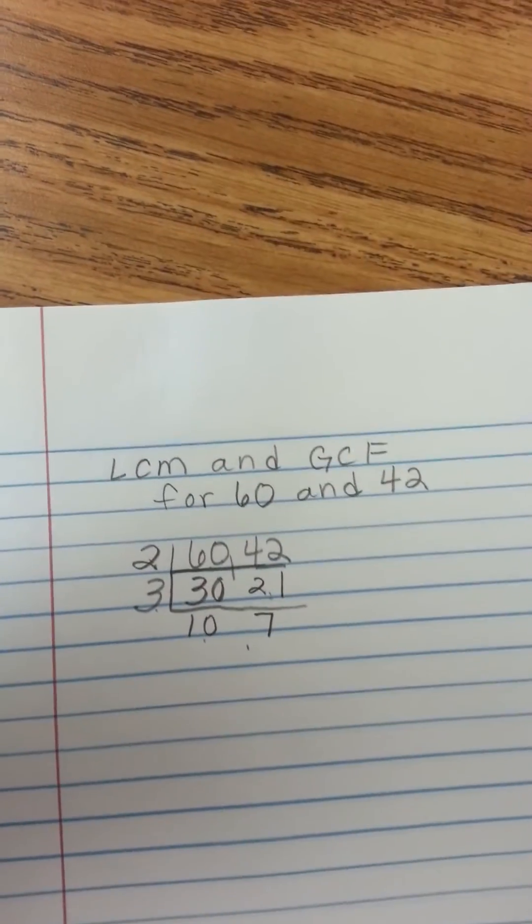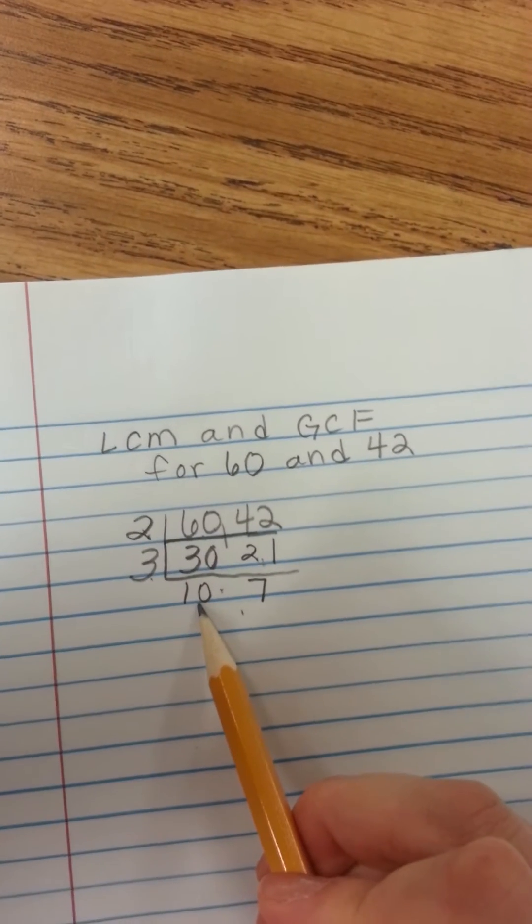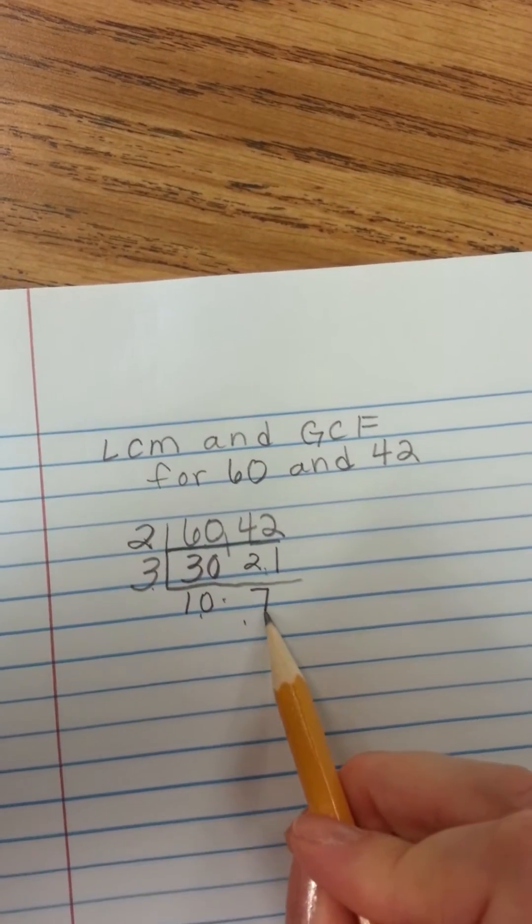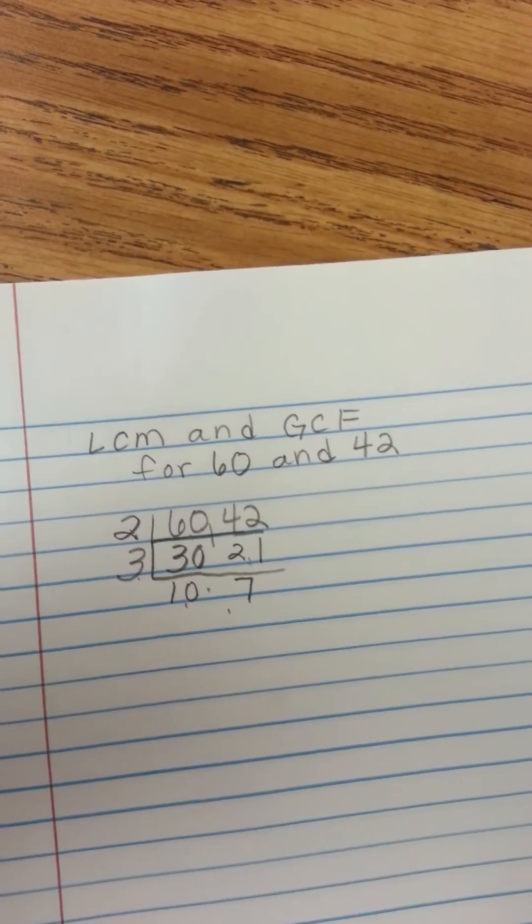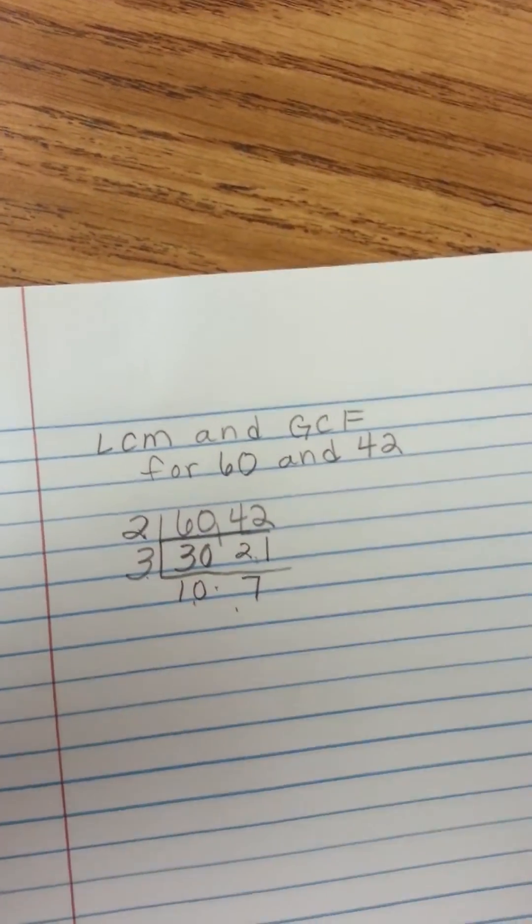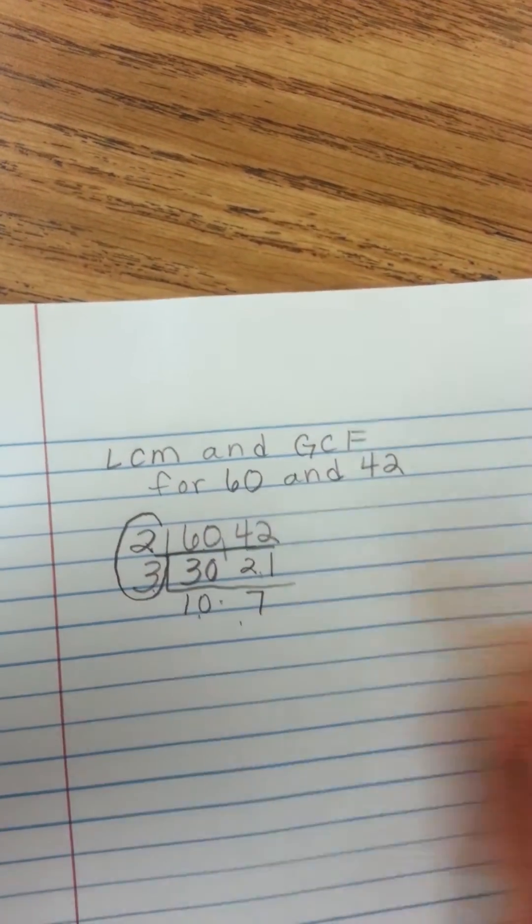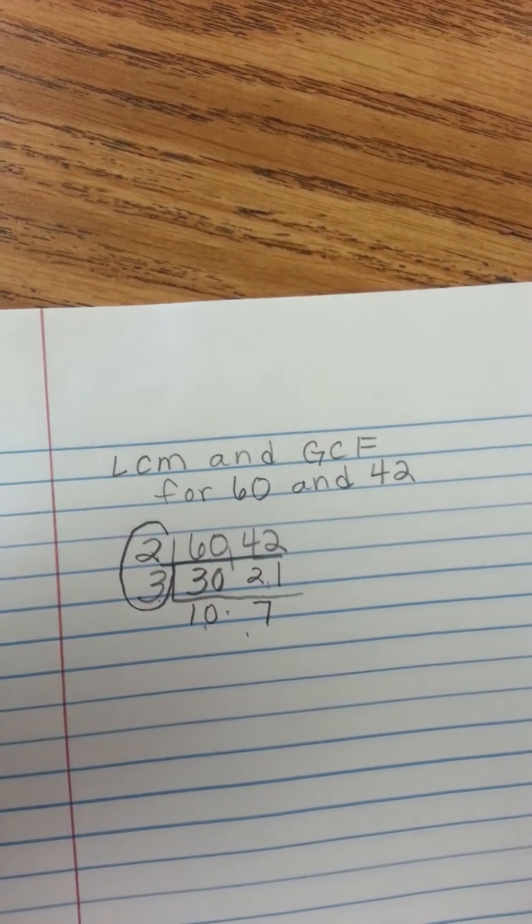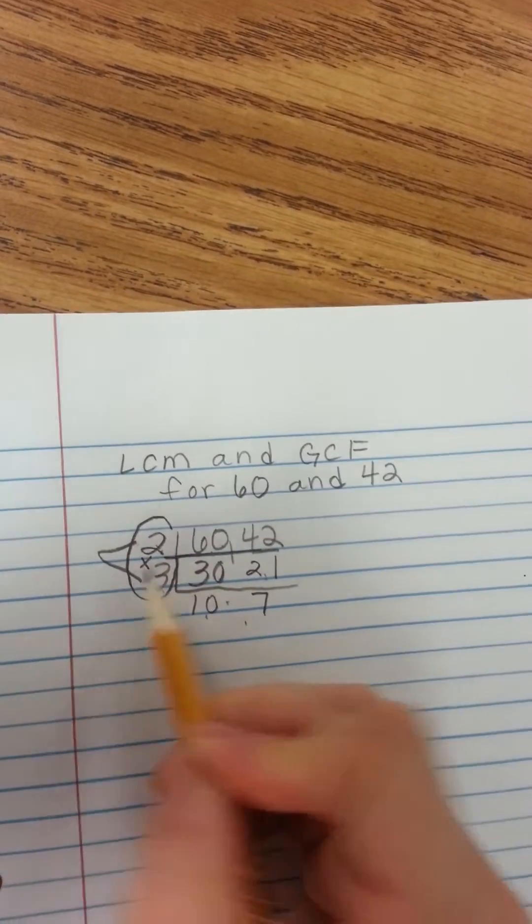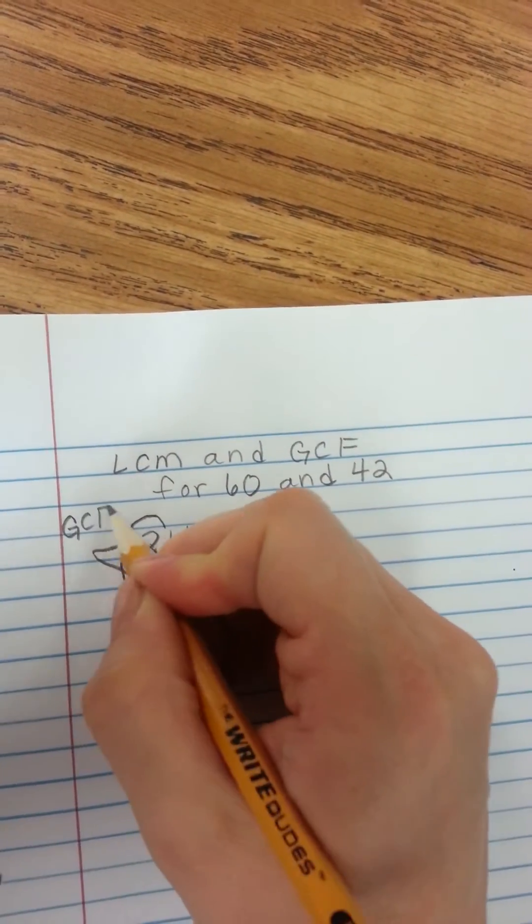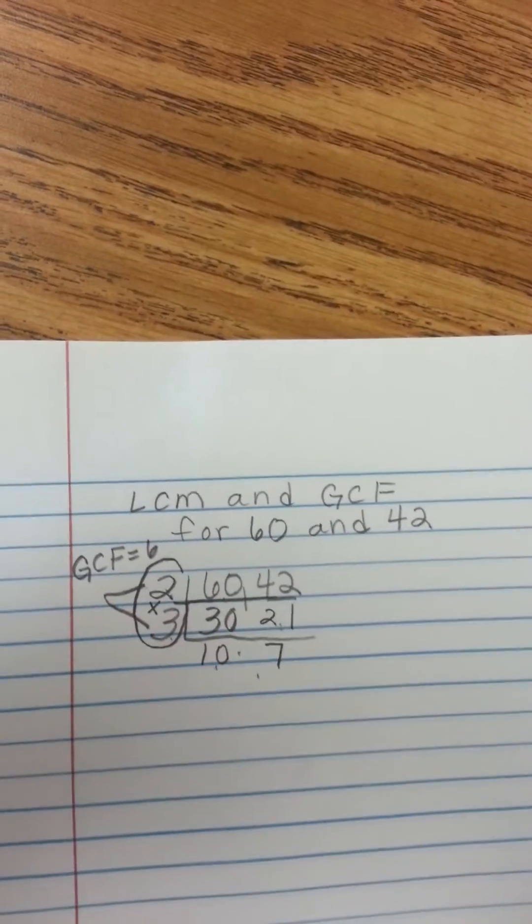Now that I'm down to 10 and 7, I'm thinking to myself that there's no other number that will go into 10 evenly with no remainder and 7 evenly with no remainder other than 1. So, that's my stopping point. And right here I can draw a little g because that's going to remind me that this is my greatest common factor, 2 times 3. So 2 times 3 is 6. My greatest common factor is 6.